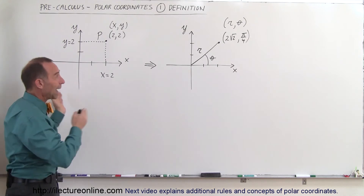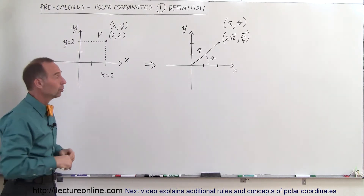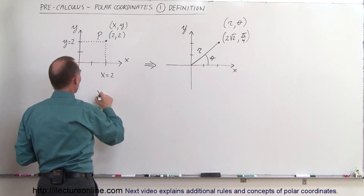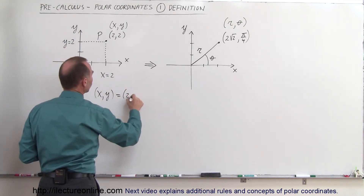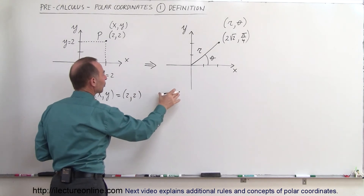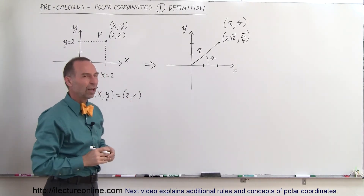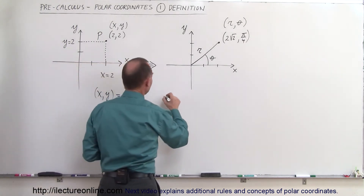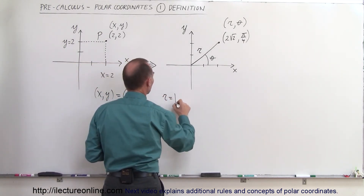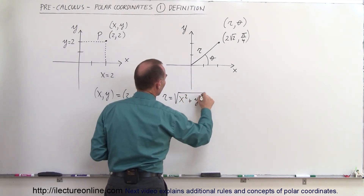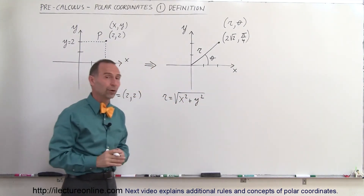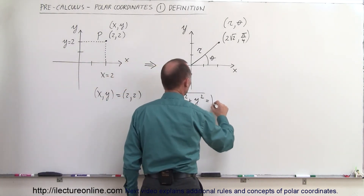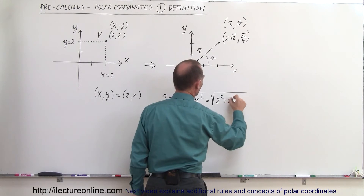This also means we should be able to go back and forth between Cartesian and polar coordinates. If we're given the point (x, y) = (2, 2), how do we find the appropriate polar coordinates? How do we find r, the distance from the origin to the point? It turns out that r is equal to the square root of x squared plus y squared, which is the distance formula. Since we have x and y, this is equal to the square root of 2 squared plus 2 squared.